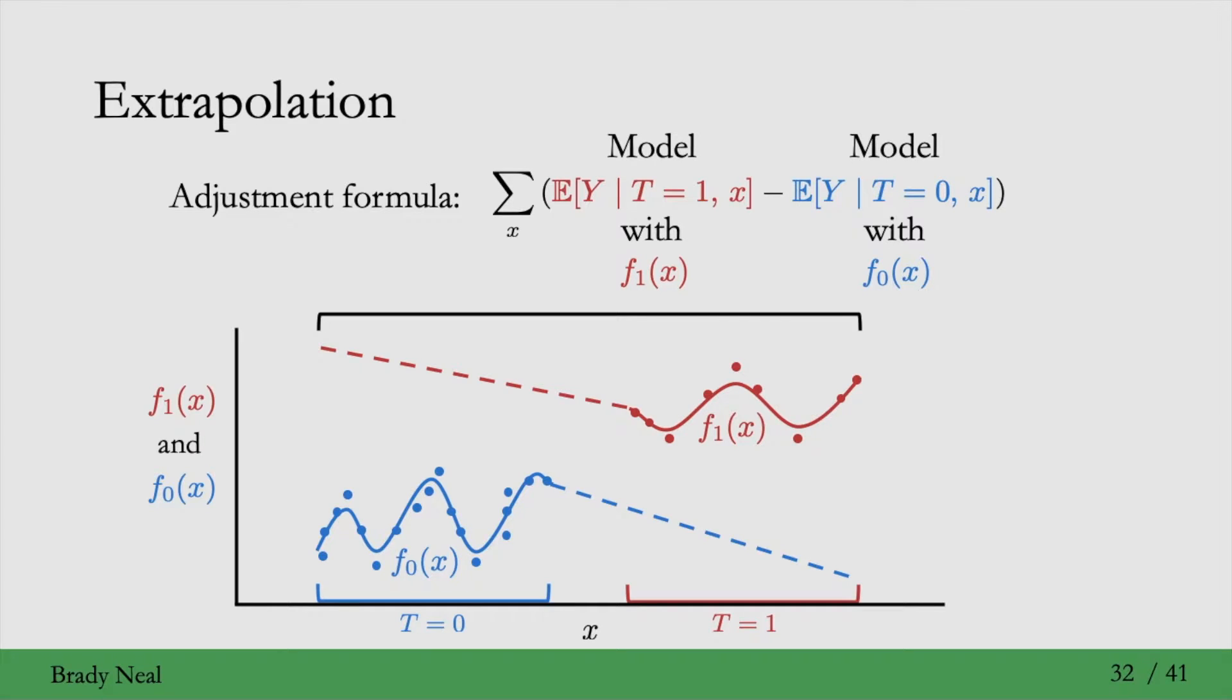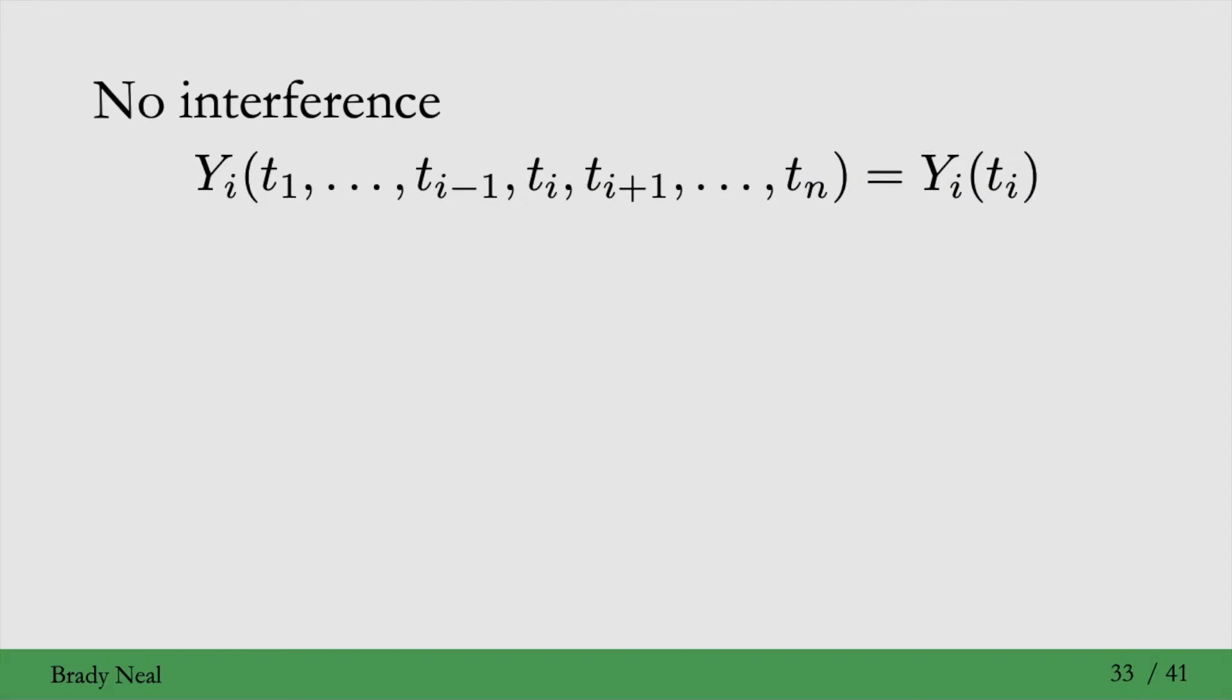With that, we'll wrap up the positivity overlap common support assumption, those are all the different names of it, and move on to the next important assumption, which is no interference.